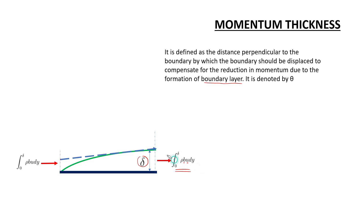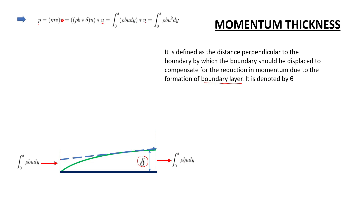Now let us look at the momentum. The momentum of the fluid is denoted by p equals m-dot times v, that is mass flow rate times velocity. So momentum flow rate equals m-dot times v, which equals rho times b times delta times u. This gives the integral from 0 to delta of rho times b times u squared dy. This is the fluid momentum flow rate.